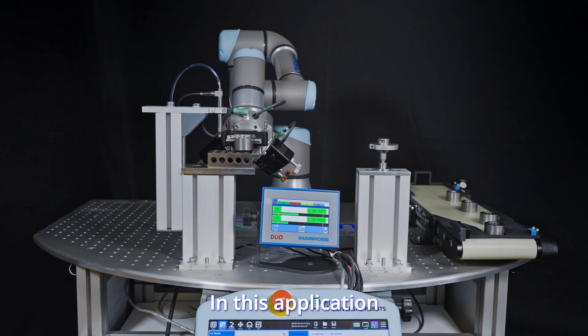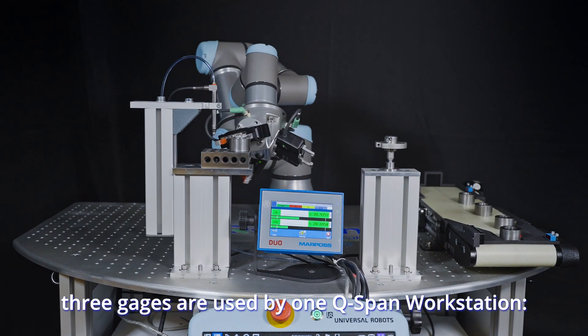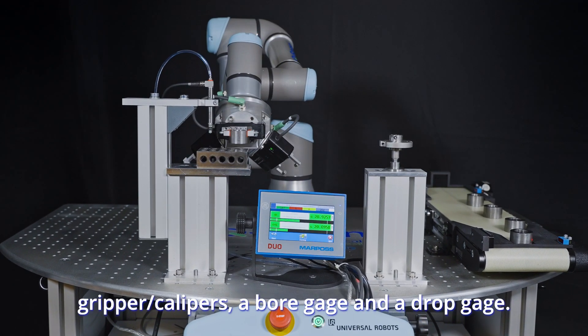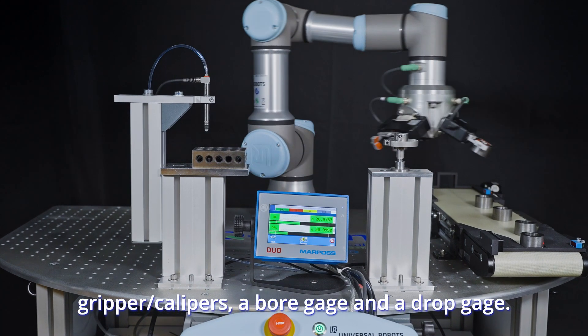In this application, three gauges are used by one QSPAN workstation: gripper calipers, a bore gauge, and a drop gauge.